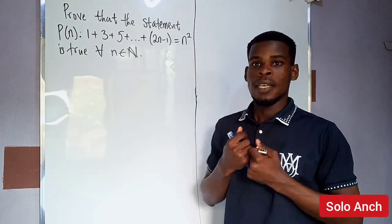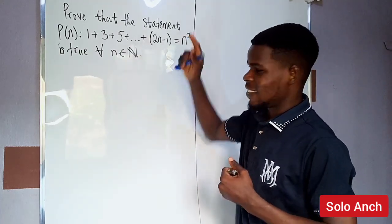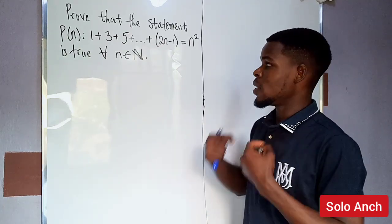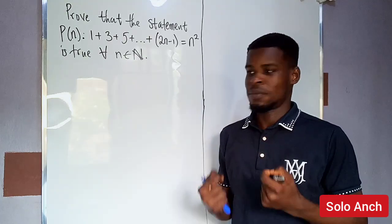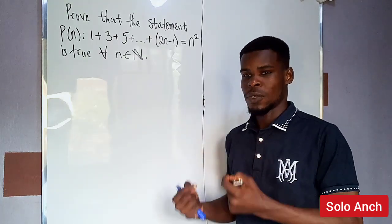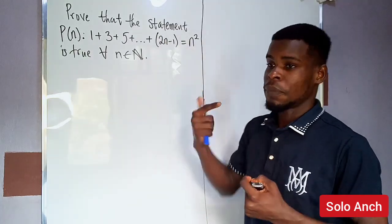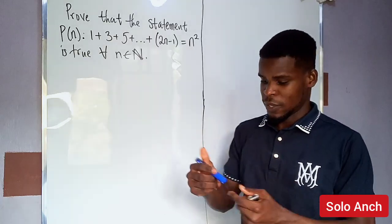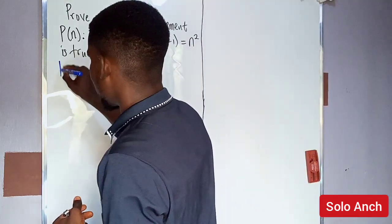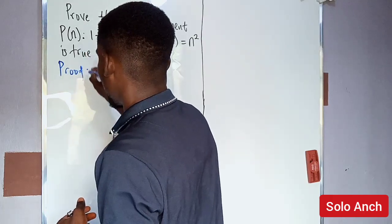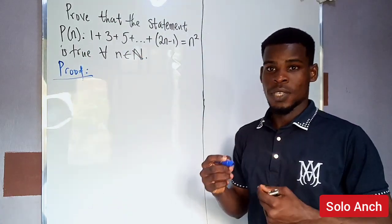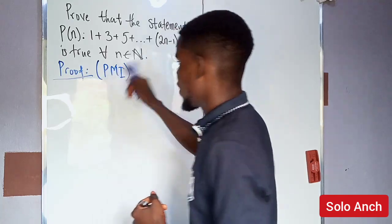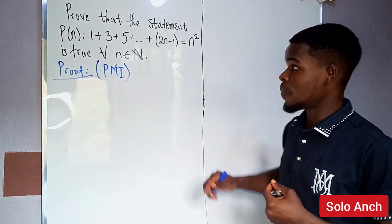We want to prove this is true for all natural numbers n. We can't just keep picking natural numbers to check, because there are infinitely many. That's why we'll use the method of mathematical induction — the principle of mathematical induction (PMI).